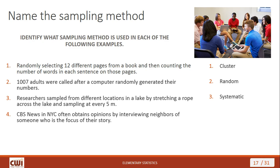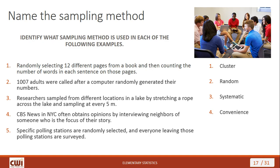Next: CBS News in New York City often obtains opinions by interviewing neighbors of someone who is the focus of their story. This is convenience sampling. There's no randomization — you're just taking what's conveniently available. The person lives there, so you talk to the neighbors who live right next door. You're taking what's readily available in front of you.